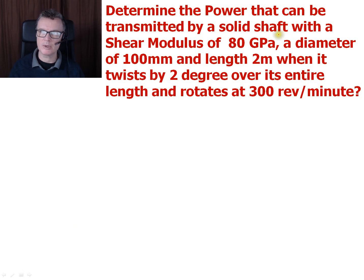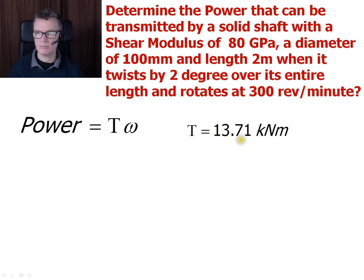Determining the power that can be transmitted by the solid shaft. So, this case, we're going to use that power is the torque times by the angular velocity that the shaft can spin at. So, that's the amount of torque that the shaft can transmit times by that. That would be the maximum power that can be transmitted. So, previously we found that the maximum torque was 13.7 kilonewton metres.